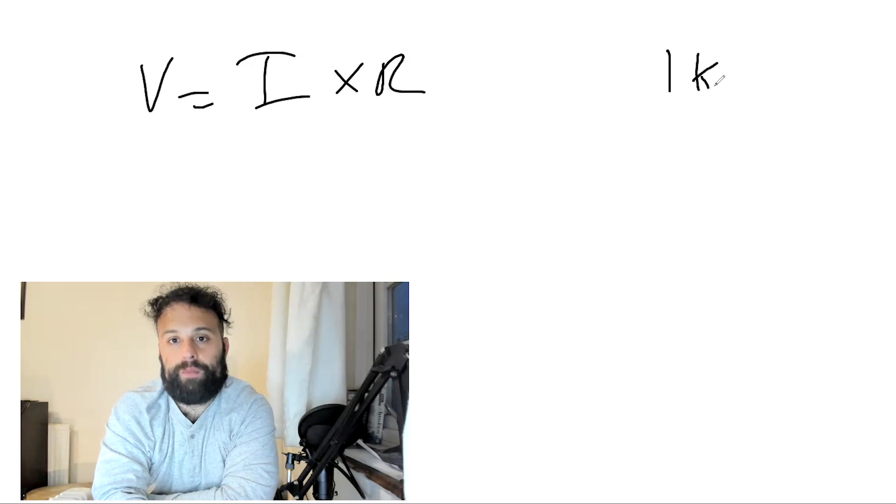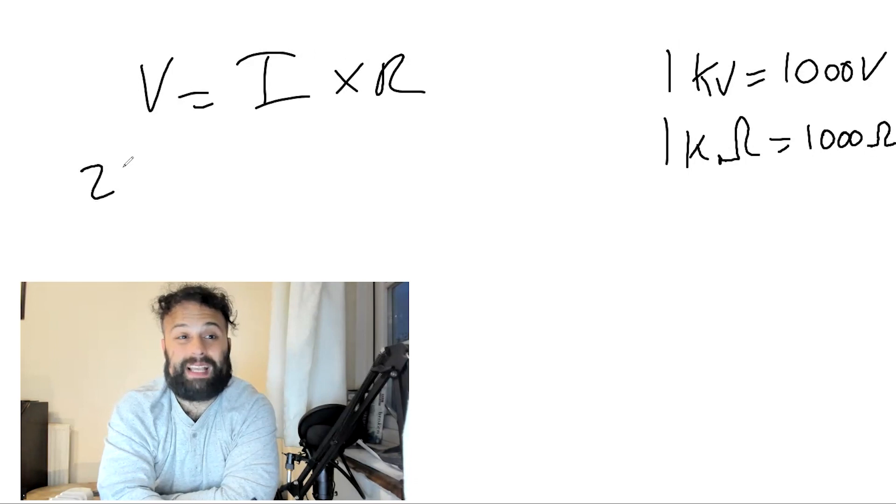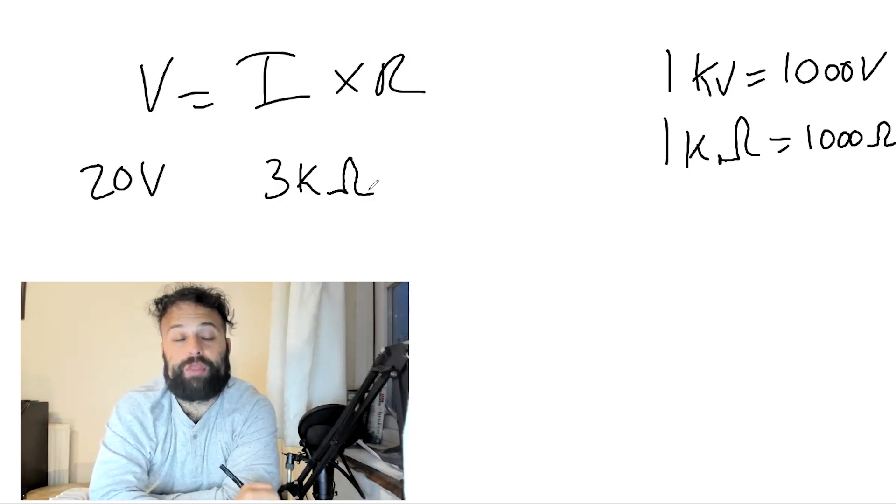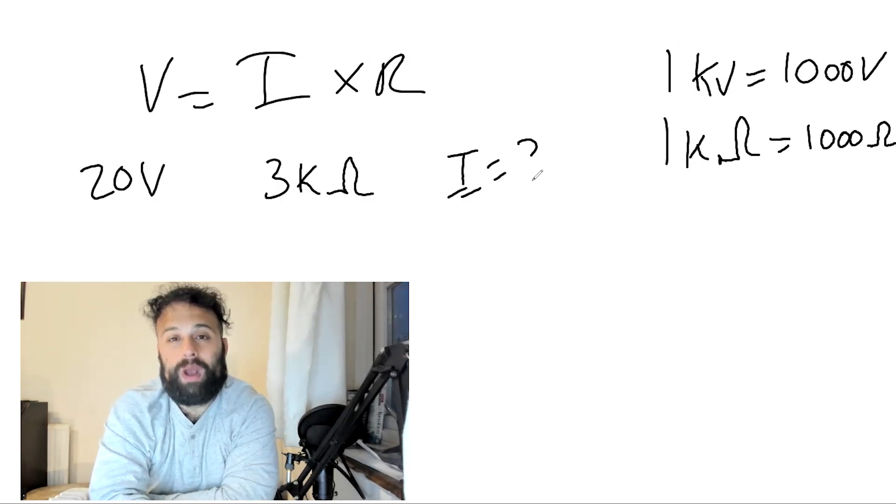Now don't forget 1 kilovolt is equal to 1,000 volts. 1 kiloohm is 1,000 ohms. Let's say a circuit had 20 volts and a 3 kiloohm resistor. What is the current going to be?